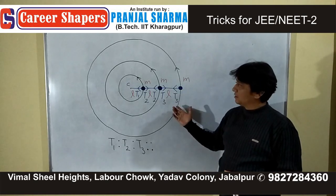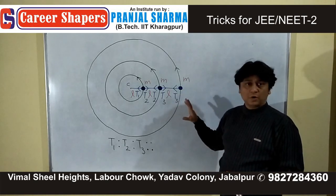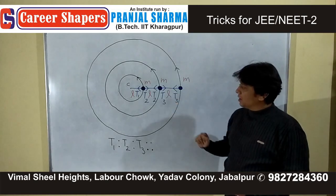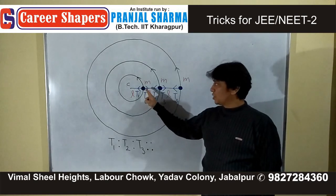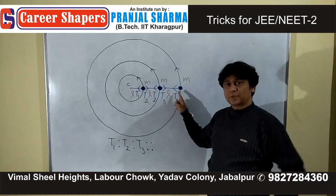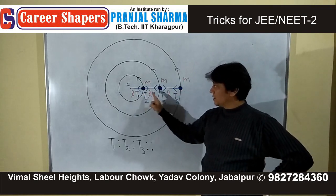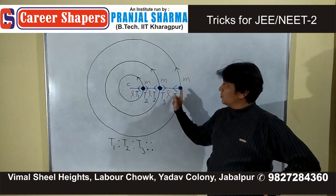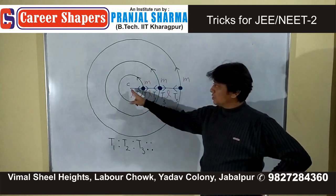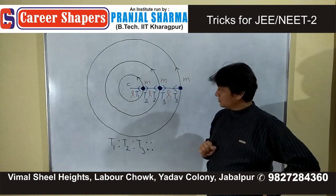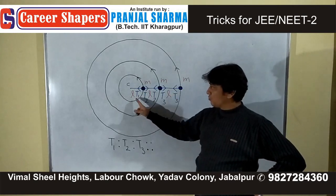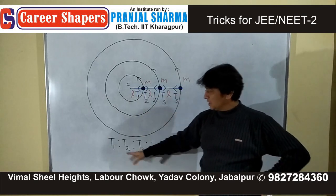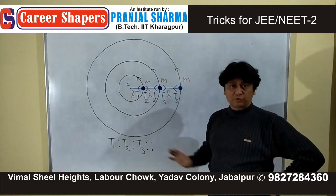Let's see a trick for a circular motion question. We have three identical masses connected by equal length ropes, moving in a concentric system. The question is to find the ratio of tension forces in all three ropes: T1 : T2 : T3.